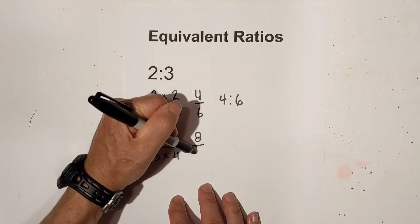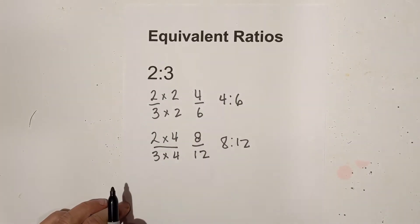Or we could multiply it by let's say 4. Notice that I'm multiplying numerator and denominator by the same number. That is key. So that gives us 8:12 and we can rewrite it like this. That is the first example.